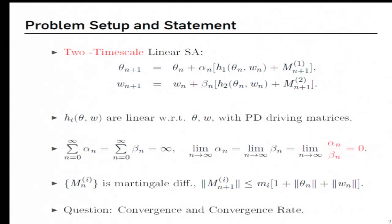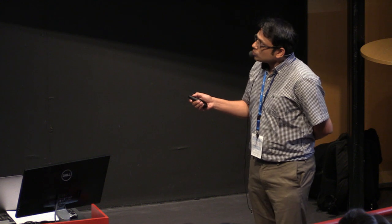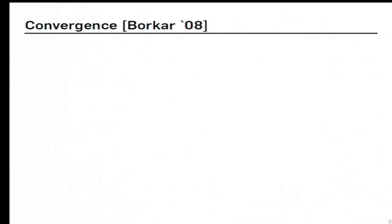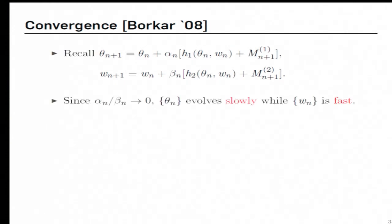So two natural questions one can ask for such algorithms is, where would such an algorithm converge to, and what would be their convergence rate? The question of convergence has more or less been answered, and you can find the details in this book by Borchard. So recall, this is the update rule, and recall that we assume that the step-size individually go to zero, and the ratio goes to zero.